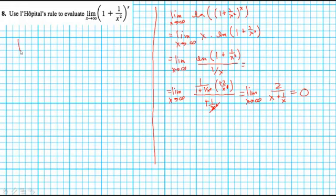So now we can come back here and go back to our original problem. Limit of 1 over x squared to the x is going to equal to e to the power of that 0, which is 1.